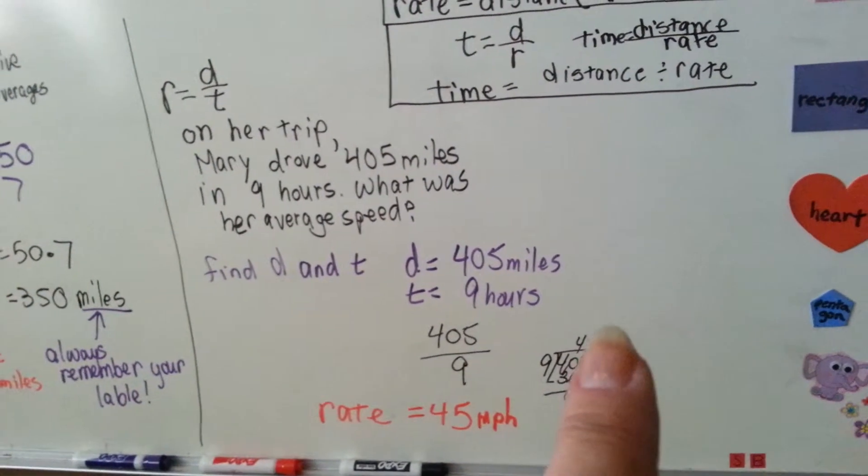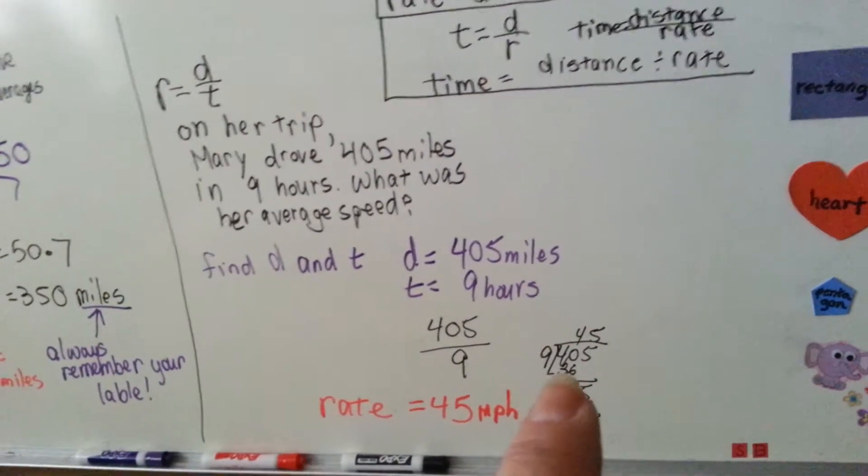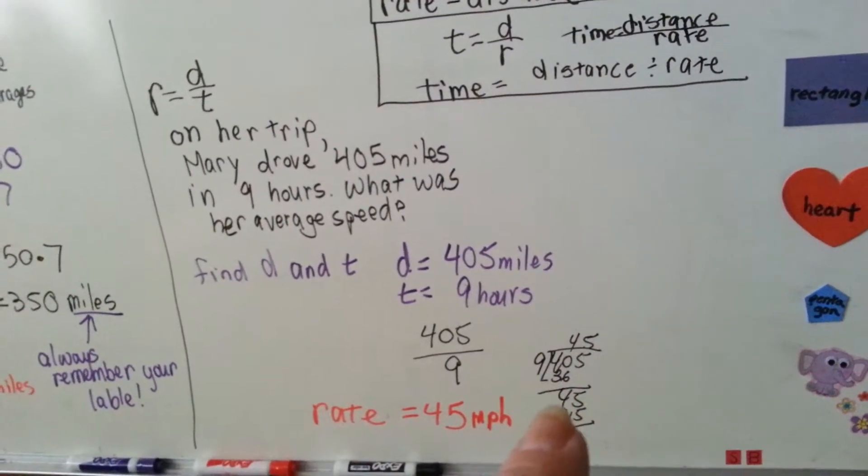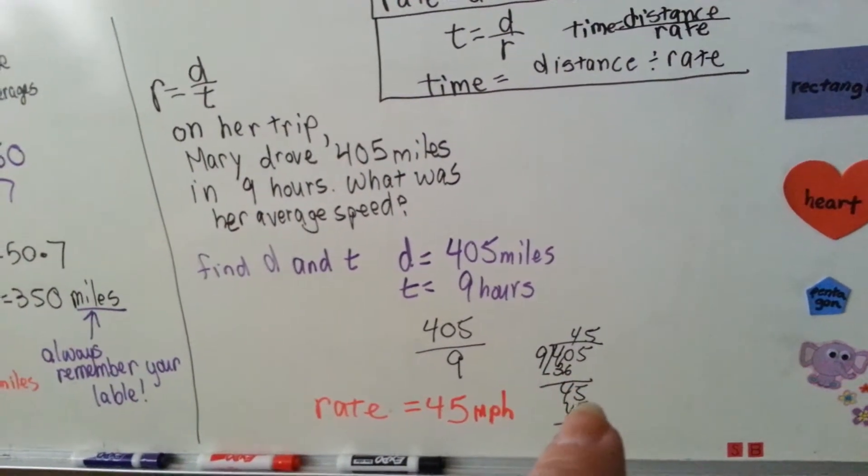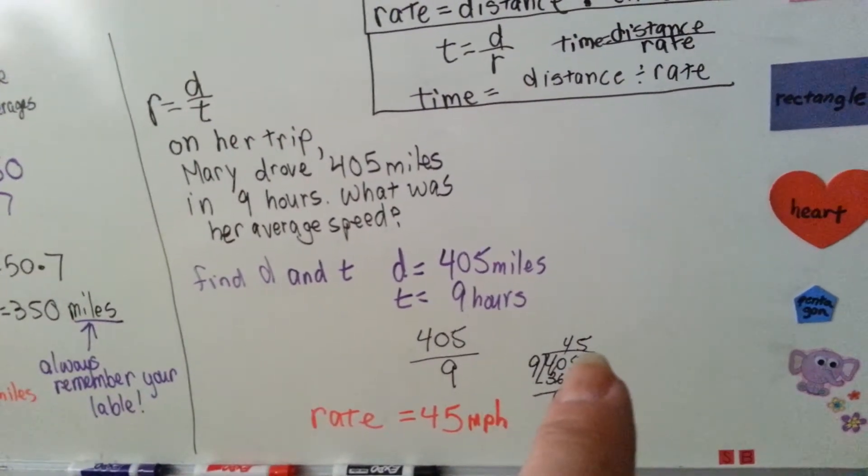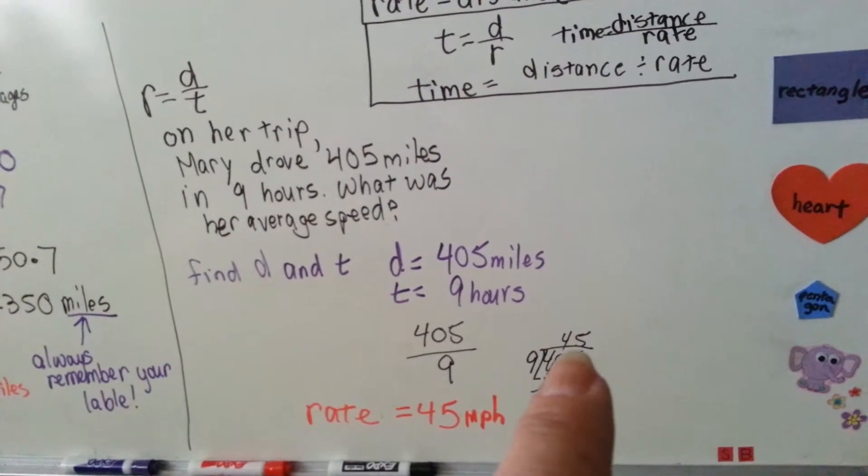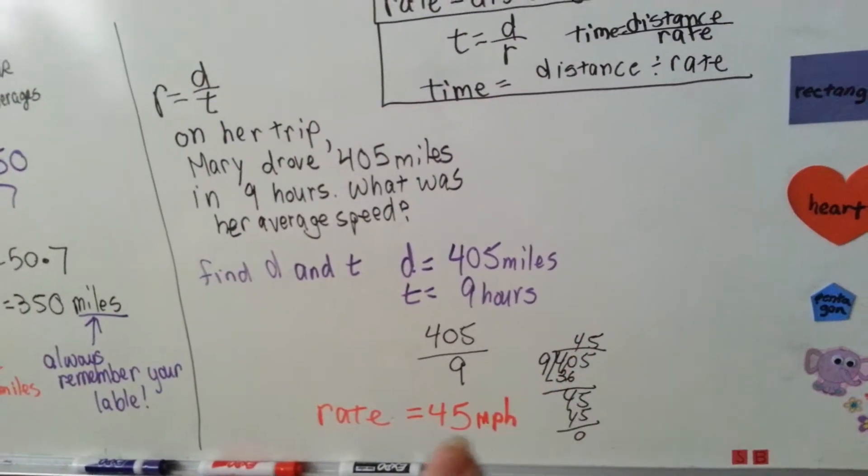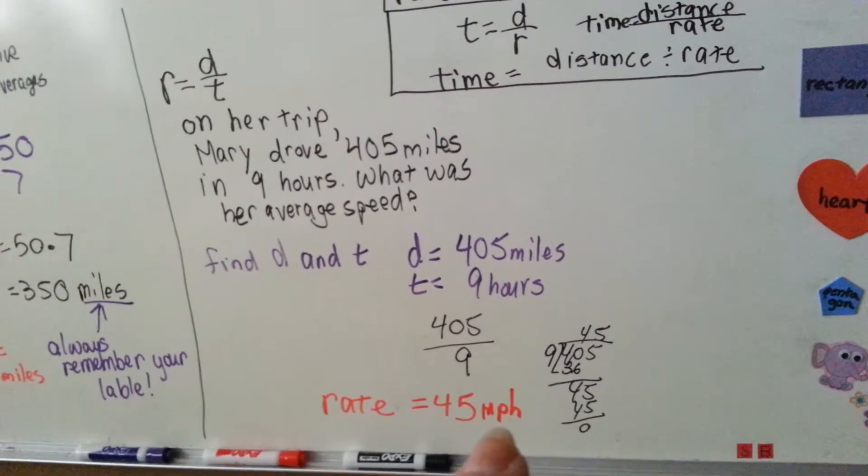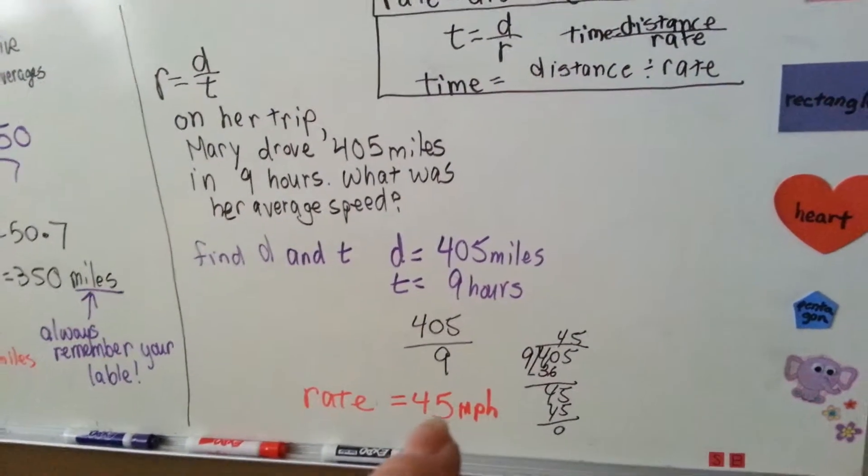Nine times four is 36. So we put the four up there and we put the 36 down here and we subtract. 40 minus 36 is four and now it's the five's turn to come down. Nine goes into 45. Nine times five is 45. So that gives us a zero in remainder so we know it took 45 miles per hour. That is her rate. 45 miles per hour is how fast she drove.